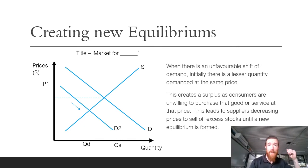When there is an unfavorable shift of demand, there is now less demanded at the same price. This creates a surplus because you can now see that demand is less than supply, and that means we are above the equilibrium point. Then businesses start to discount stock to clear excess stock until that new equilibrium is formed. So a surplus occurs.